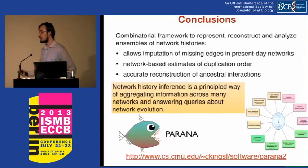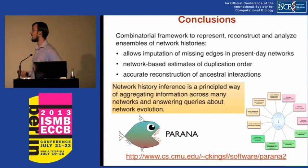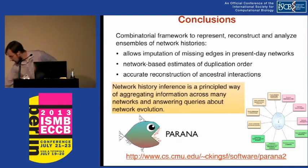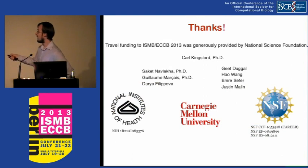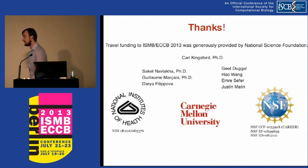In conclusion, I presented a combinatorial framework to reconstruct and analyze ensembles of histories that allows imputation of missing edges, network estimates of duplication order, and accurate reconstruction of ancestral networks. The network history inference problem is a principled way of aggregating information across many networks and answering interesting queries about network evolution. We have an open-source software package available. I'd like to thank the Travel Fellowship, my post-doctoral advisor Carl Kingsford, and my current and previous group members.